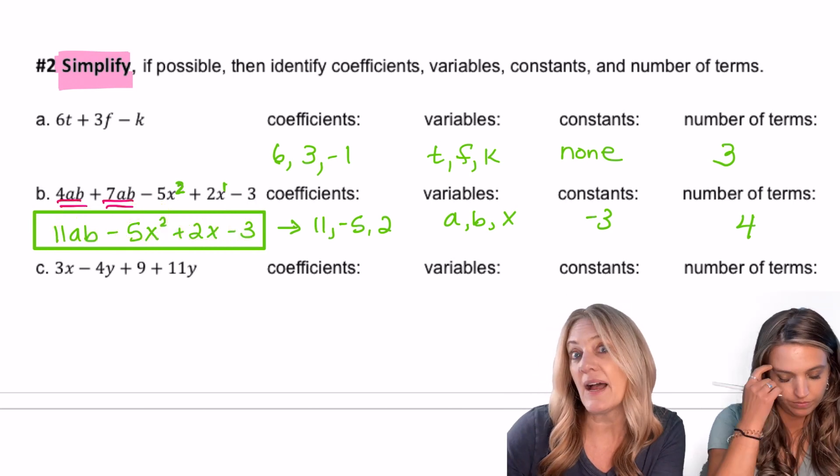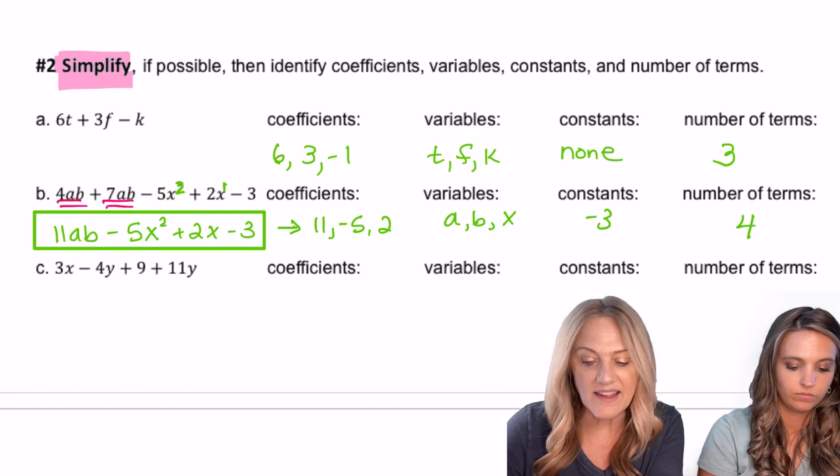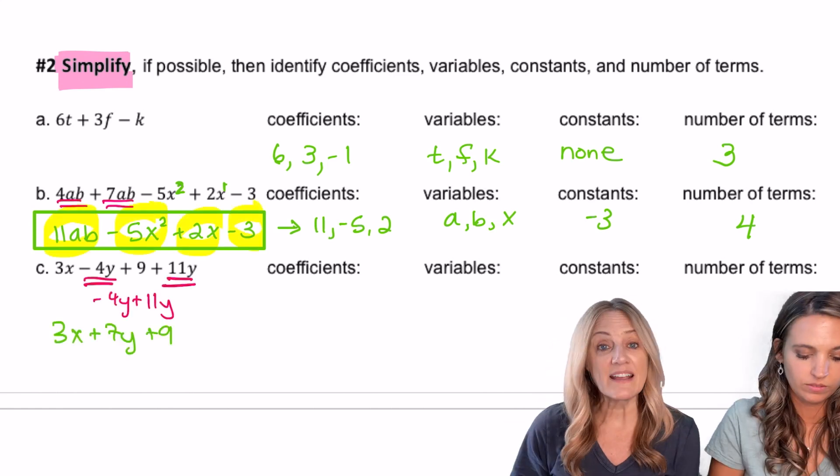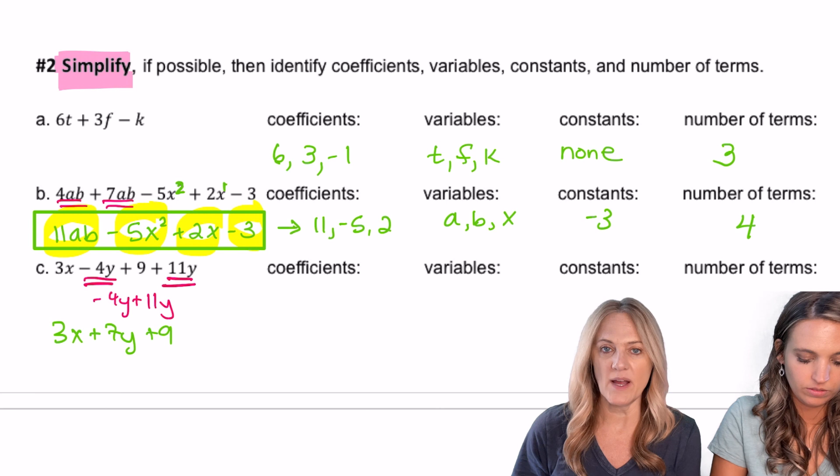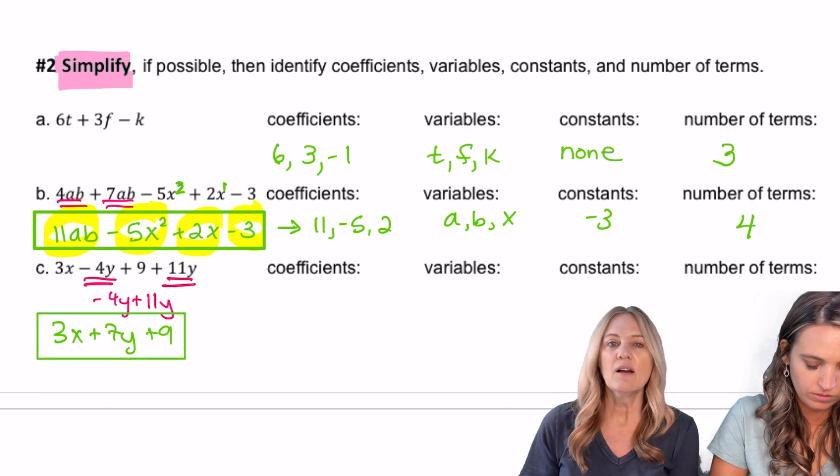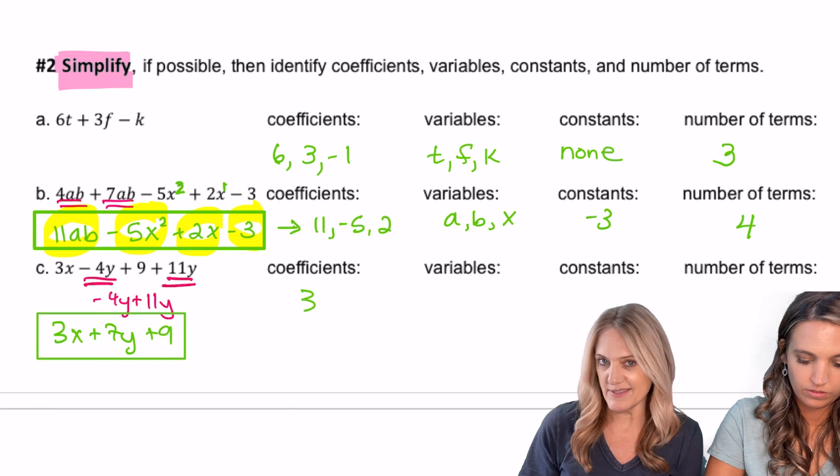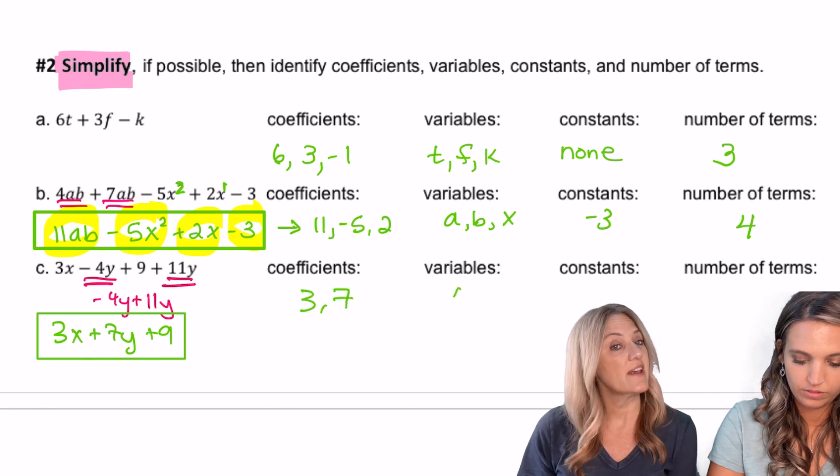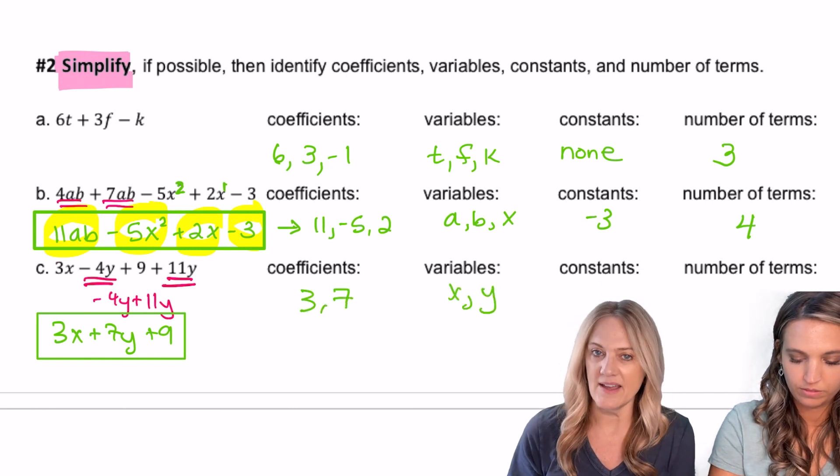Last, look at c. Do we have anything to combine? Can we simplify? Yes, those y terms. So negative 4y plus 11y is 7y. Simplified form: 3x + 7y + 9. What are the coefficients? 3 and 7. Variables: x, y. Constant: 9. How many terms? 3.